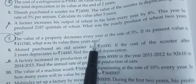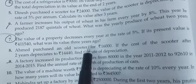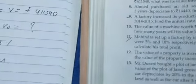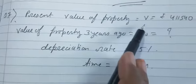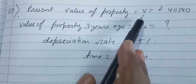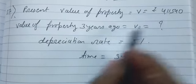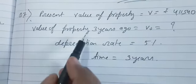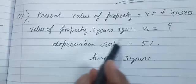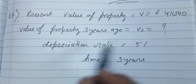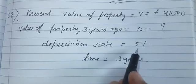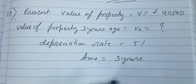Next line: if its present value is rupees 4,11,540, what was its value three years ago? Let's see how we'll solve the sum. Whatever is given I have noted here: present value of the property I have taken it as V, that is 4,11,540 rupees. Value of the property three years ago, that was V₀, question mark. Depreciation rate is 5% and time is three years.